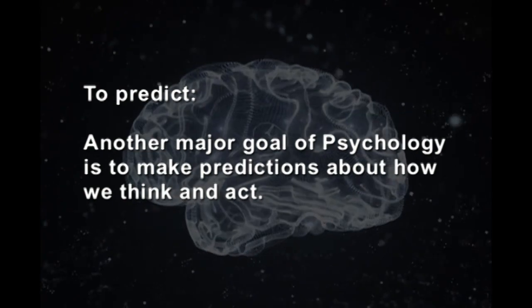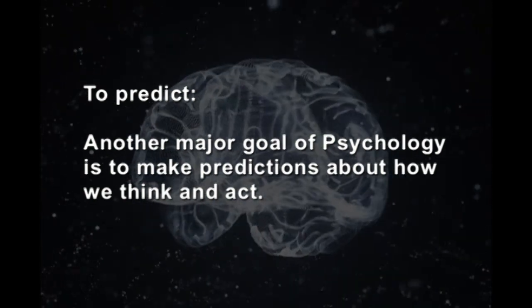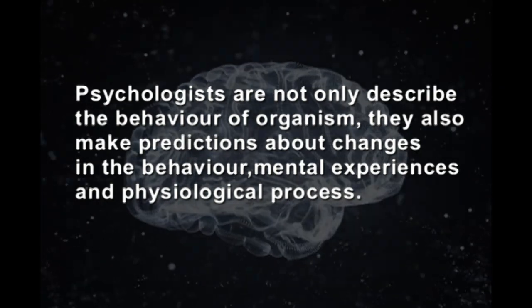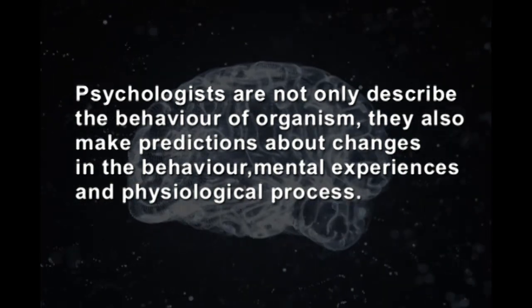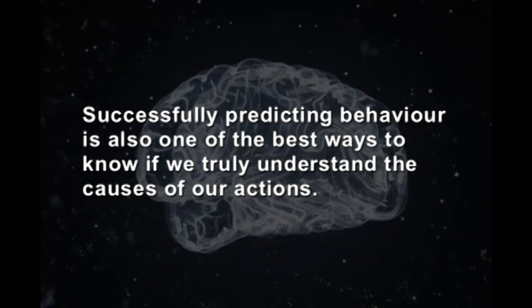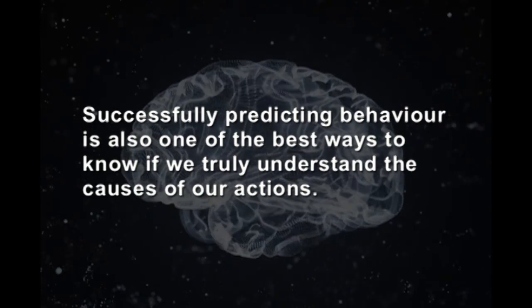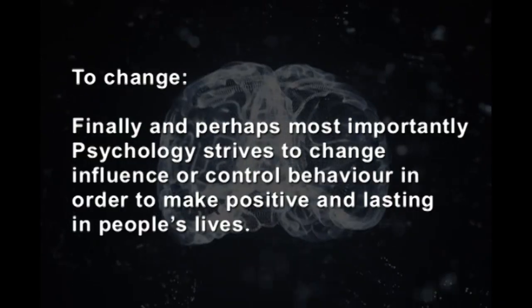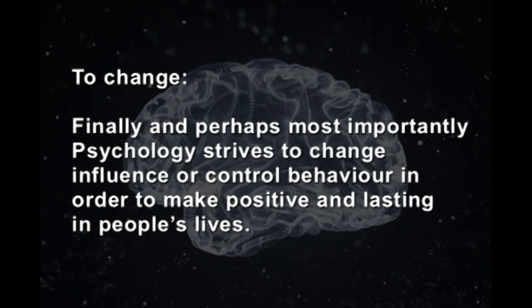The third goal is to predict. Another major goal of psychology is to make predictions about how we think and act. Psychologists not only describe the behavior of organisms — they also make predictions about changes in behavior, mental experiences, and physiological processes. Once we understand more about what happens and why, we can use that information to make predictions about why and how it might happen again in the future. Successfully predicting behavior is also one of the best ways to know if we truly understand the causes of our actions.